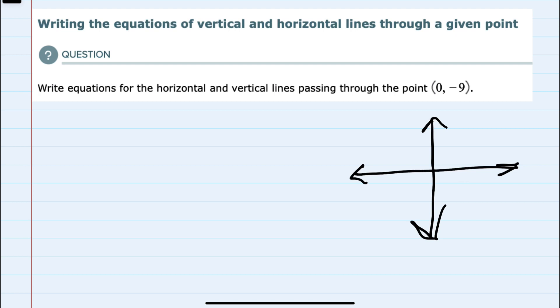So it's at (0, -9). And if we were to think of a horizontal line going through that point, horizontal lines have the same y value no matter what x value we use.